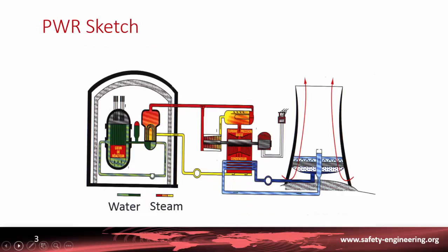Here is a sketch of a pressurized water reactor. There is a vessel with inside the core of the reactor, and the steam generator where the coolant of the primary system exchanges heat with the secondary system. The secondary system is water entering the steam generator which is transformed into steam, and the steam goes to the turbine which drives the generator. The steam is then condensed in the condenser, which is cooled by an open circuit — either a cooling tower or river water.